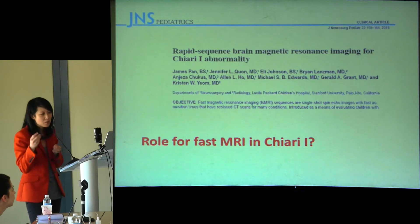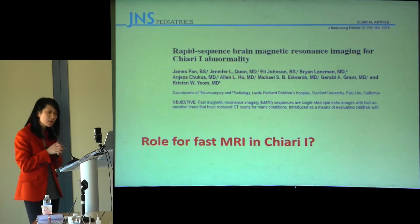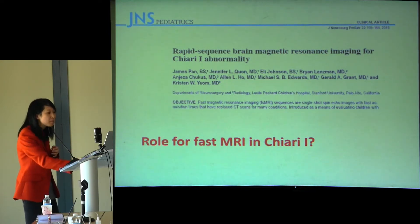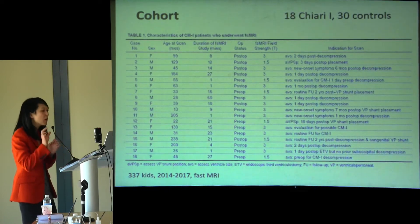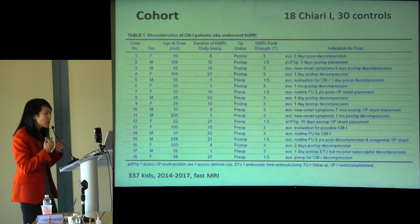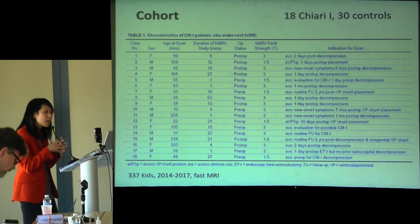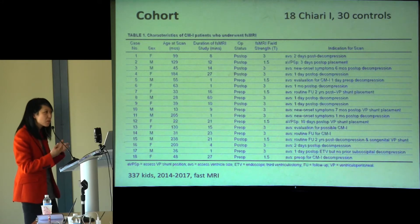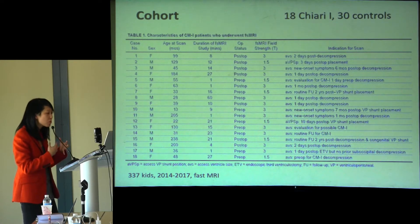The goal was to see if there's a role for fast scan — whether it's a HASTE sequence on a Siemens magnet or a basic single-shot fast spin echo on GE, depending on vendor. Between 2014 and 2017, we looked at over 300 kids and identified who had Chiari of some sort, whether prior to surgery or in a post-op setting. They weren't scanned for Chiari purposes, but for other reasons like ventriculomegaly, dysmorphic features, cysts, or shunts.